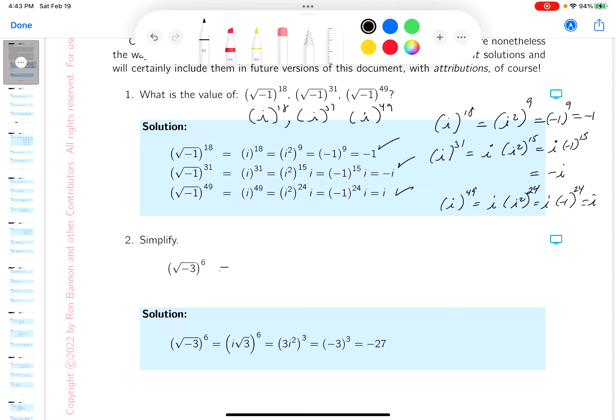Okay, my recommendation before you do anything in the problem is to write the i down. I do see the square root of minus 1, and then I'd have root 3 to the 6th power.